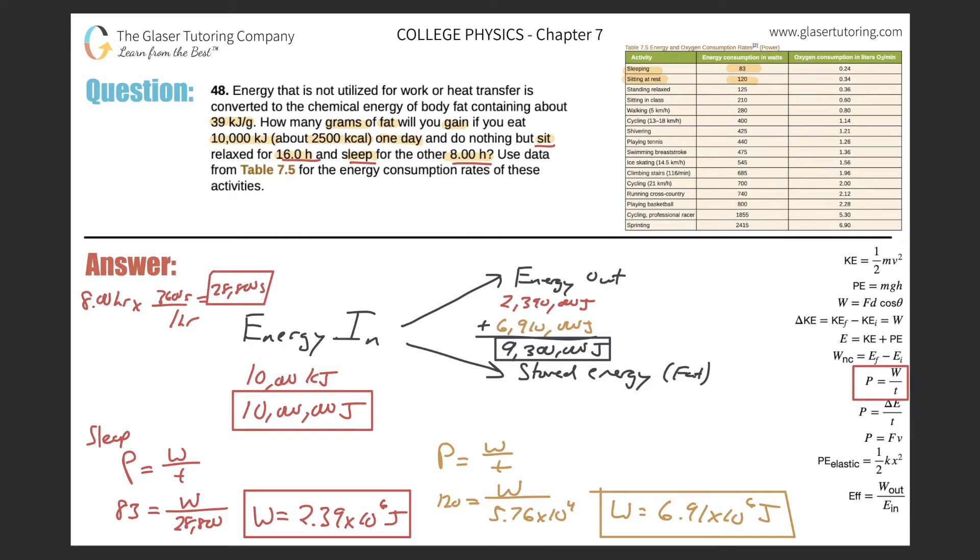So why don't we now subtract the two so we can find the stored energy. So basically it then would be 10 million joules minus the 9,300,000 joules, and that leaves us with 700,000 joules of energy that is going to be converted into fat.